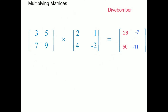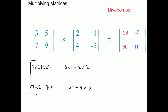So if we just look at the math: row 1 column 1 is 3 times 2 plus 5 times 4; row 1 column 2 is 3 times 1 plus 5 times negative 2; row 2 column 1 is 7 times 2 plus 9 times 4; and row 2 column 2 is 7 times 1 plus 9 times negative 2. That gives us the answer matrix: 26, negative 7, 50, negative 11.